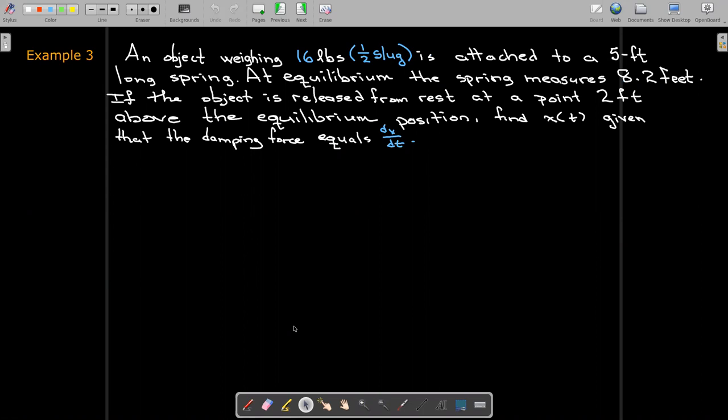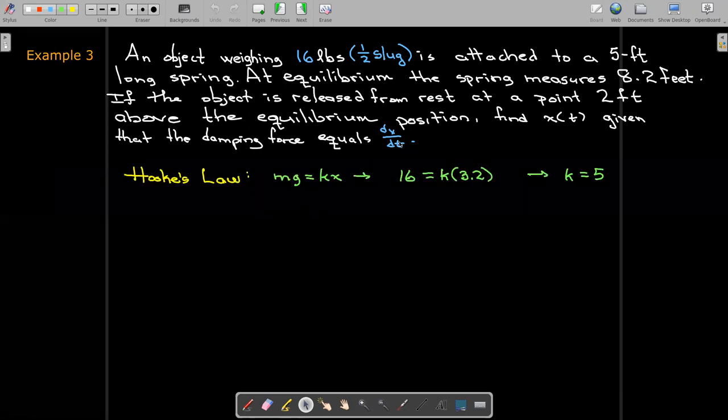In our third example, we're given the weight as 16 pounds, which would be half of a slug. It's attached to a 5 foot long spring. So that's the spring is 5 feet long before attaching the object to it. And when you do make the attachment, then the spring stretches to 8.2 feet. So that information should be enough to calculate the spring constant. Then we're told that the object is released from rest at a point 2 feet above the equilibrium position. So above would mean a negative displacement. And from rest means that it's not imparted with any initial velocity. The initial velocity is 0. And we'd like to find the x of t, and we're going to be told that the damping force is going to equal the velocity. So we can first calculate the spring constant from Hooke's law.